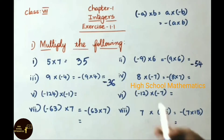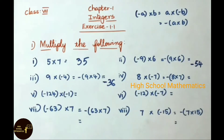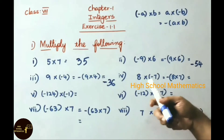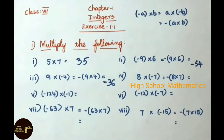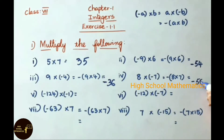See now the fourth sum: 8 into minus 7, that equals to minus of 8 into 7, that equals to minus 56. So the answer is minus 56.